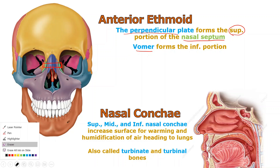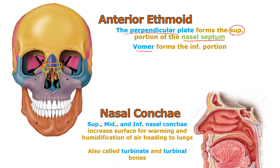On either side of the perpendicular plate you'll notice teardrop shapes — those are the middle nasal conchae. The superior ones are buried up in there and we can't see them. Don't be confused by the little green structures down here — those are facial bones too. The superior and middle conchae are part of the ethmoid bone, but the inferior nasal conchae are considered to be their own separate pair of facial bones, not part of the ethmoid.